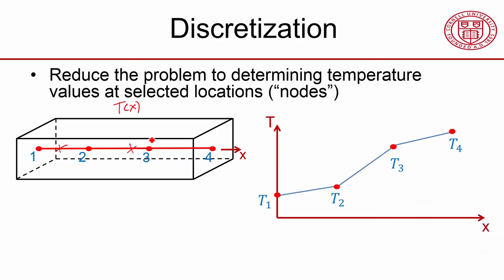So which means that if I plot the temperature versus x, and these are my four values, then in between, it's just a linear interpolation. I don't know these values yet, but I know the shape. The shape is going to be that.